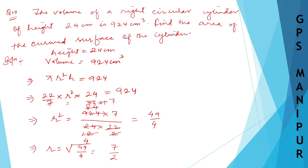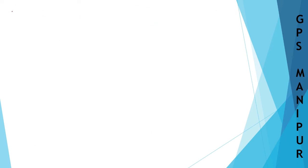The question says find the area of curved surface of the cylinder. So we need to find the curved surface area of the cylinder. The formula for curved surface area of a cylinder is 2πrh.